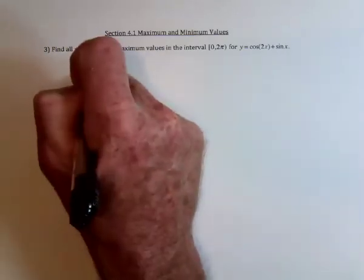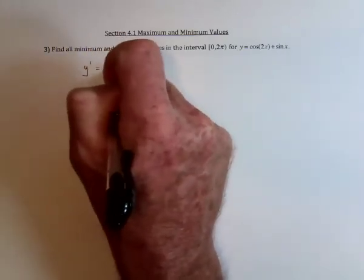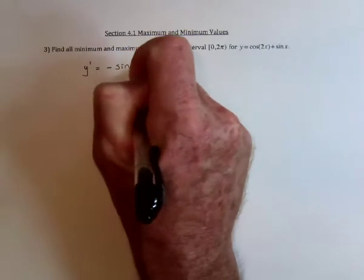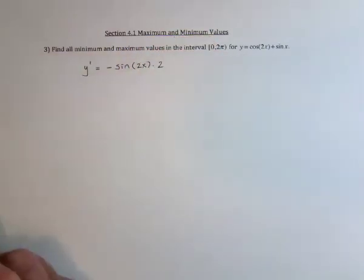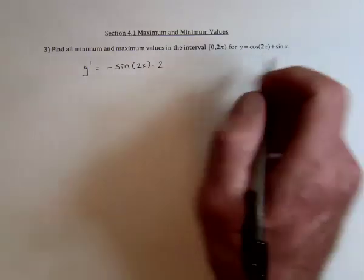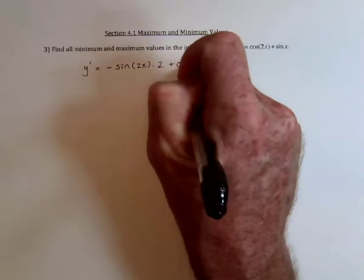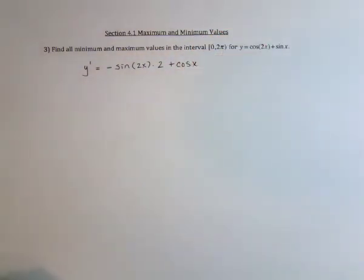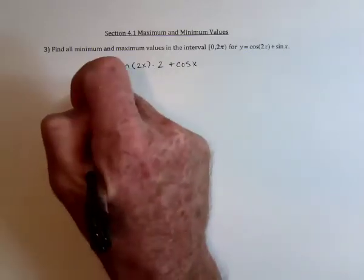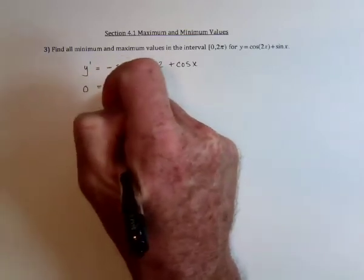So the derivative of cosine is negative sine, and then the chain rule says take the derivative of 2x, which is a 2, and then the derivative of sine is positive cosine. So there's no place where sine or cosine are undefined, so the derivative is always defined. Now, when does the derivative equal 0?